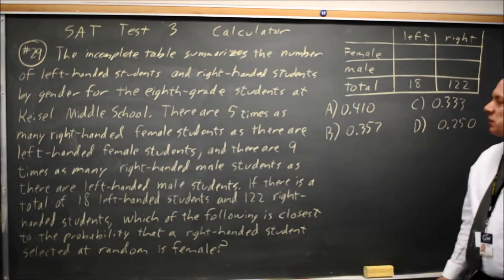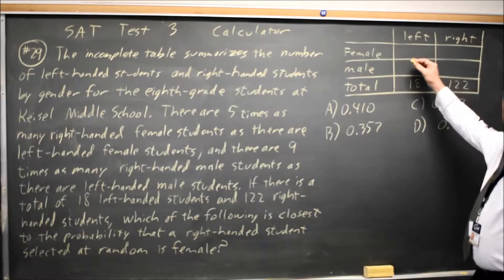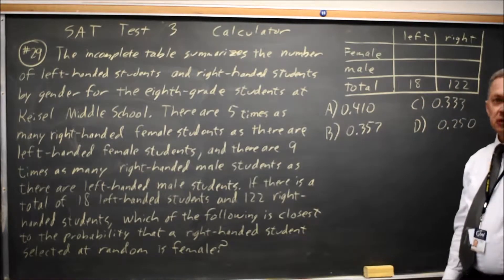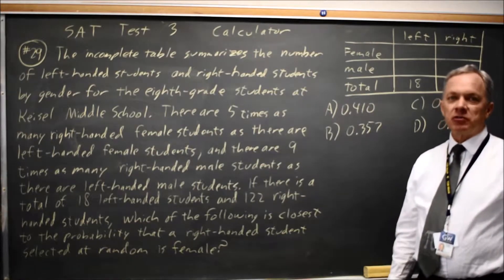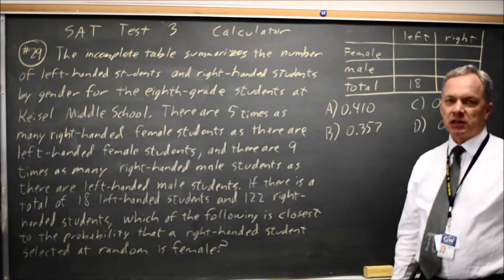They give us information about the number of left-handed male and female students, the number of right-handed male and female students, and the ratio of left to right for male and for female.